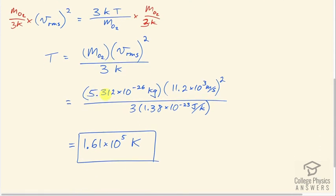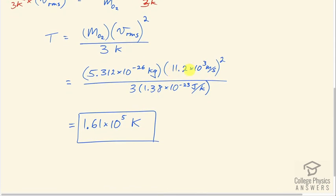So that's 5.312 times 10 to the minus 26 kilograms times 11.2 times 10 to the 3 meters per second squared divided by 3 times 1.38 times 10 to the minus 23 joules per Kelvin. And that's a temperature of 1.61 times 10 to the 5 Kelvin.